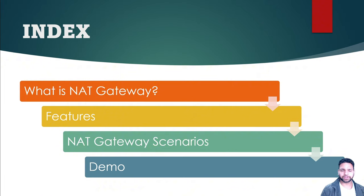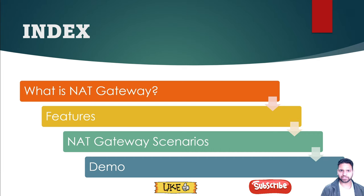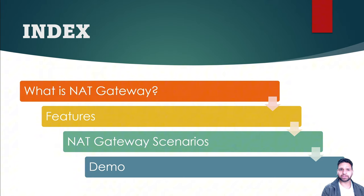What is NAT gateway? NAT gateway is a managed service which provides source network address translation. The traffic from your private IP addresses will be converted into a static public IP address, and applications outside your environment will only see traffic coming from a static public IP address or a range of IP addresses defined in the NAT gateway. Being a managed service, NAT gateway is highly available and scalable, and private resources in Azure like virtual machines get outbound connectivity to the internet.